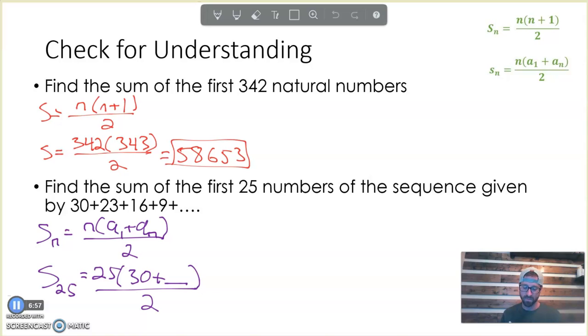To find the nth term in an arithmetic sequence, we do our first term plus the common difference times n minus 1. To find the 25th term, we take my first term of 30. My common difference is minus 7 because we're going down by 7 each time. Then we do 25 minus 1, which is 24. That becomes 30 minus 168, or negative 138. So the 25th term in the sequence is negative 138.